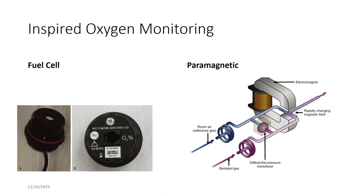The fuel cell must be calibrated — the piece is taken out and exposed to room air for a couple minutes so it knows what 21% oxygen is. Oxygen in the sample permeates a membrane and enters a potassium hydroxide electrolyte solution, generating a potential between a lead anode and a noble metal cathode. The measured voltage between the electrodes is proportional to the oxygen tension in the sample.